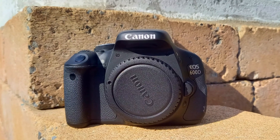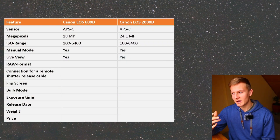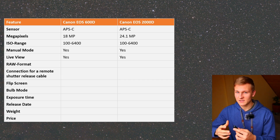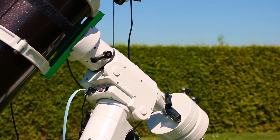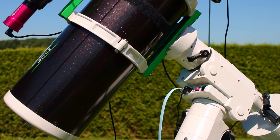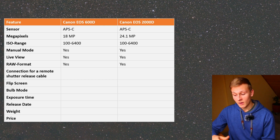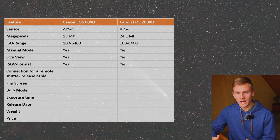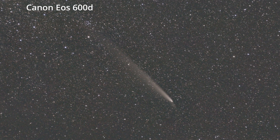Live view mode is one of the most helpful features a camera can have for astrophotography, because we need to focus on the stars and achieving perfect focus is essential for great deep sky results. Both cameras have live view mode, which is great. Regarding RAW: RAW is very important in astrophotography because you can only stack images captured in RAW in post-processing. I personally use Deep Sky Stacker, and both cameras can capture images in RAW.